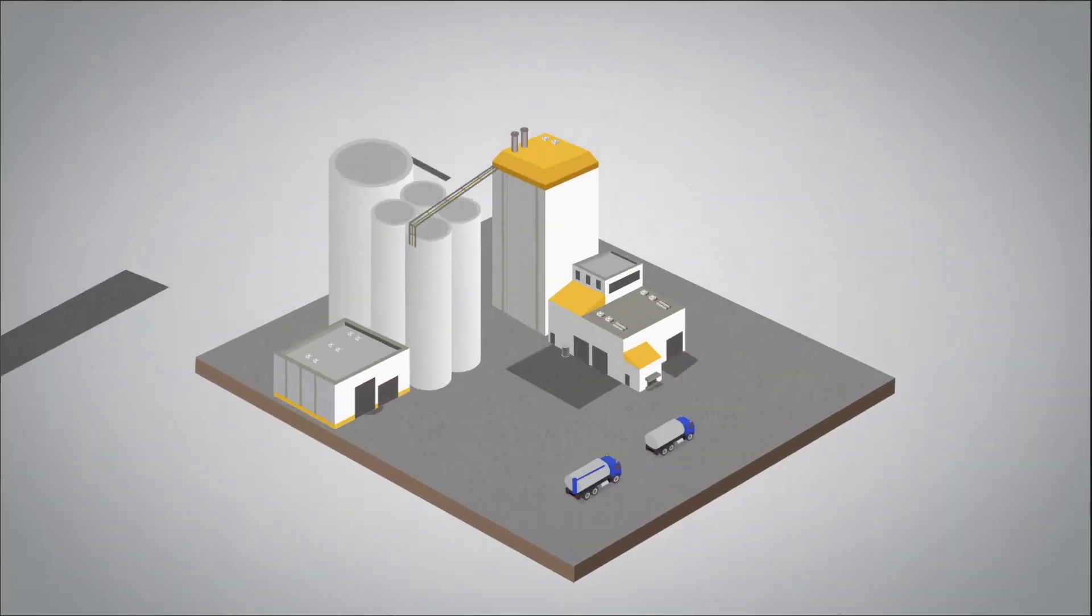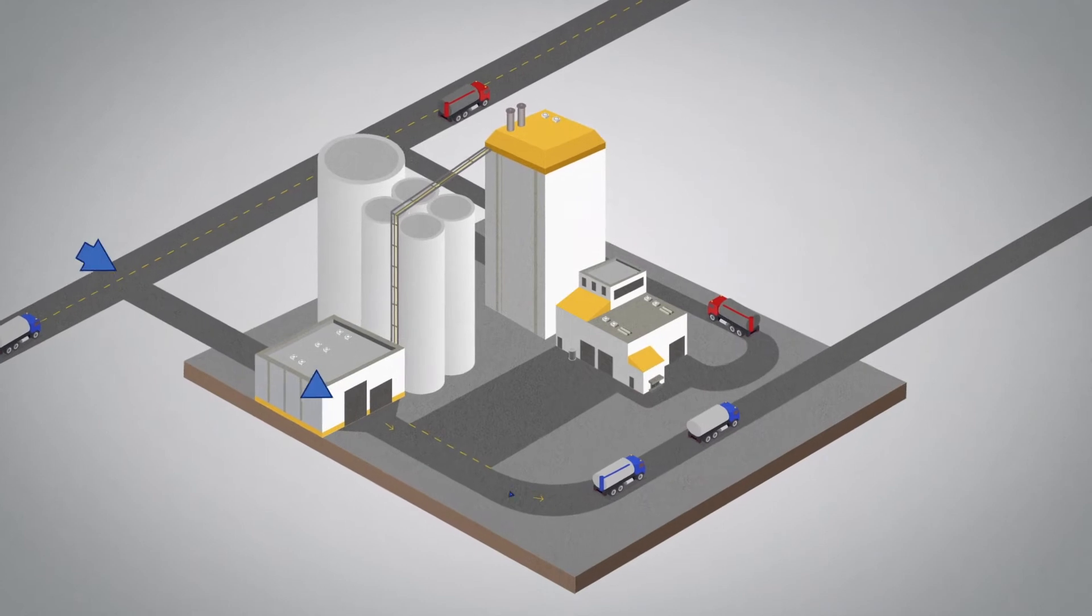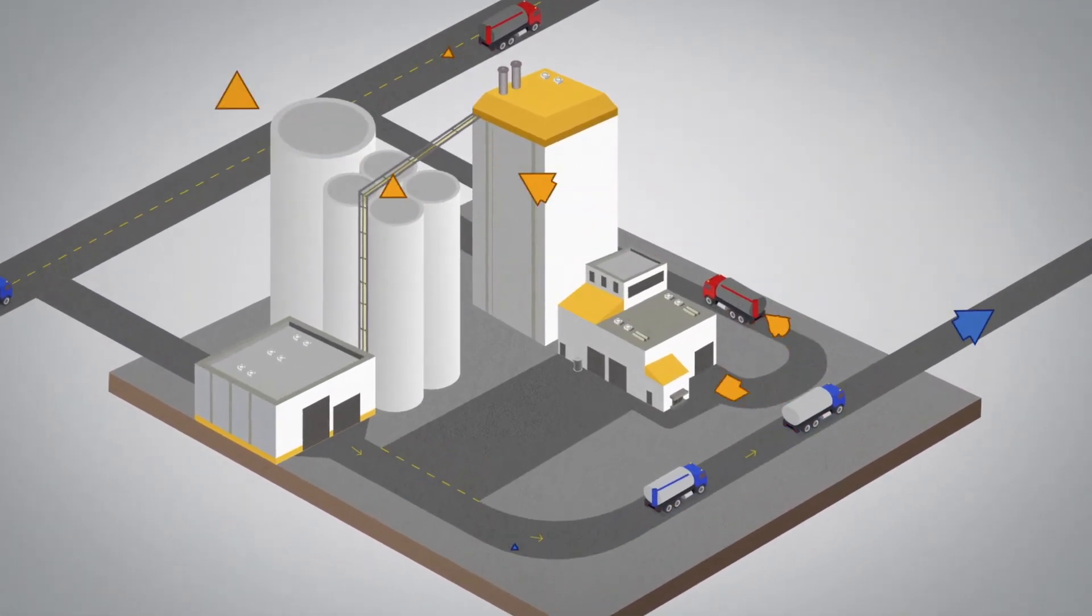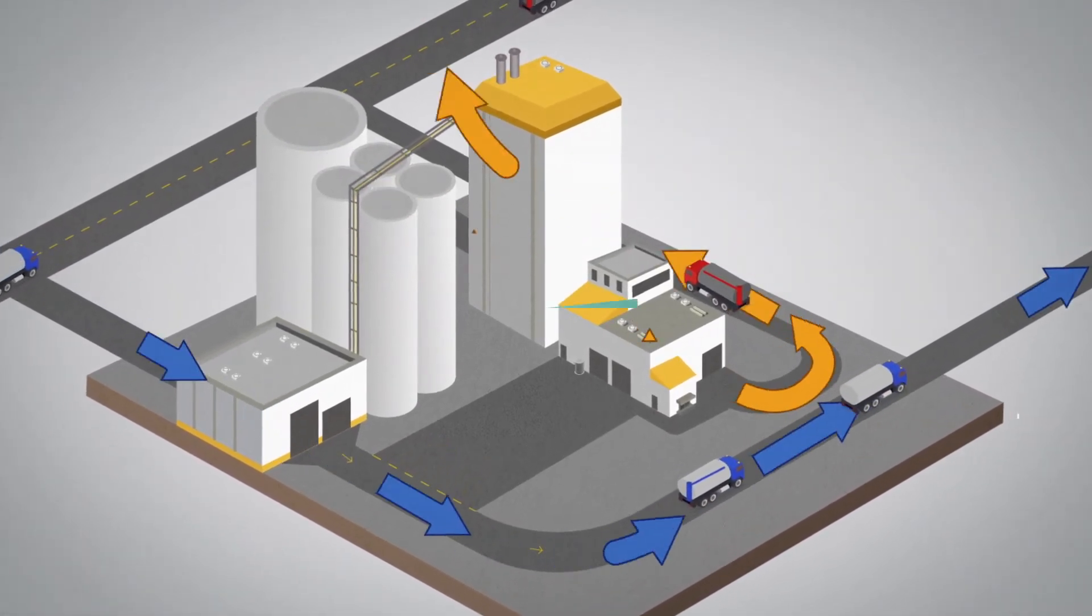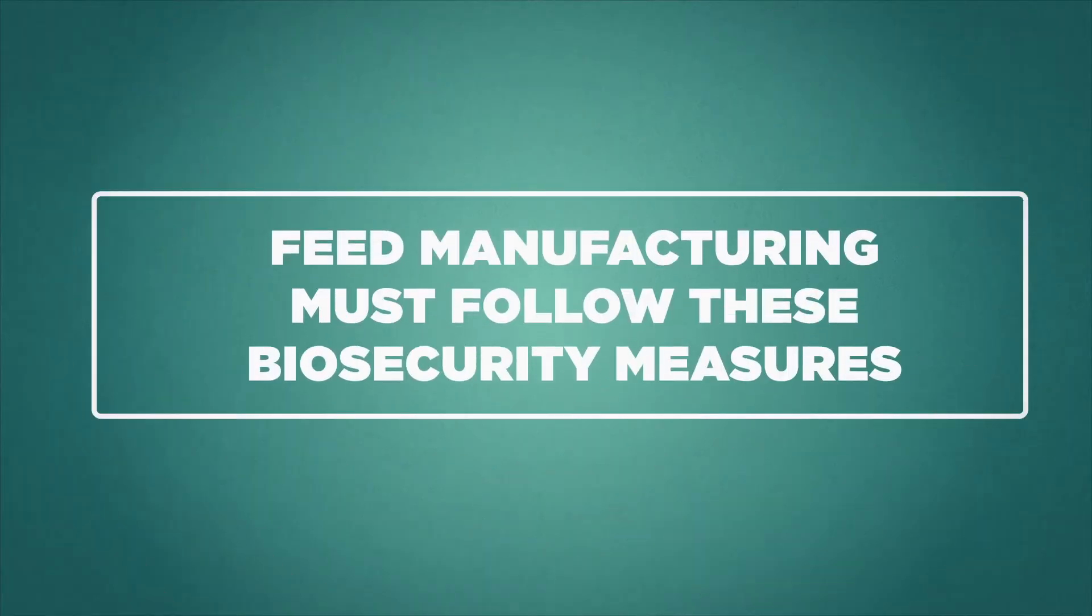A feed mill must have well-defined traffic patterns for personnel, visitors, and trucks on the premises. Feed manufacturing must follow these biosecurity measures.